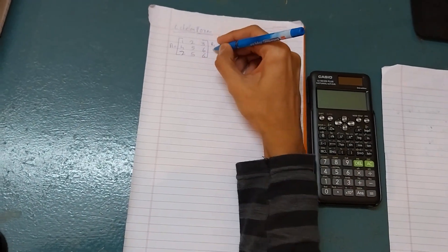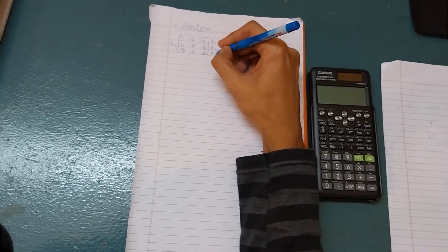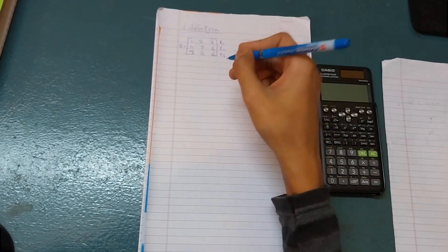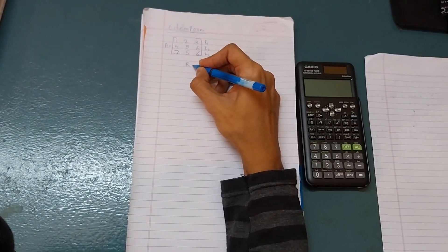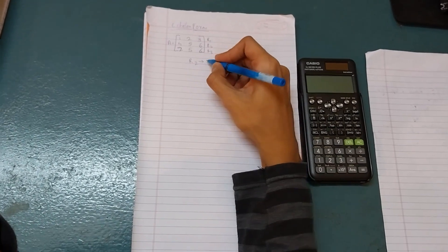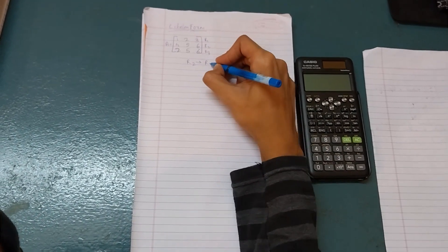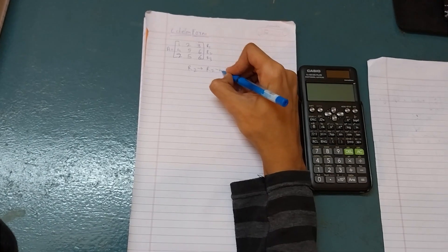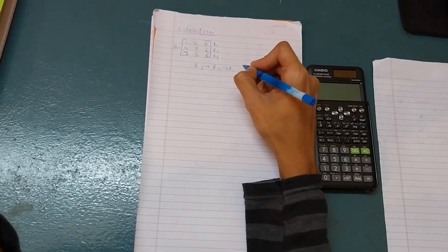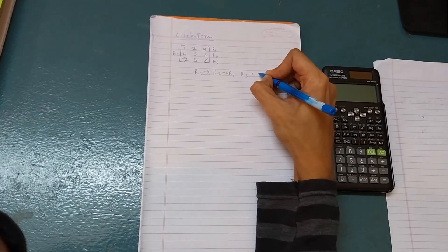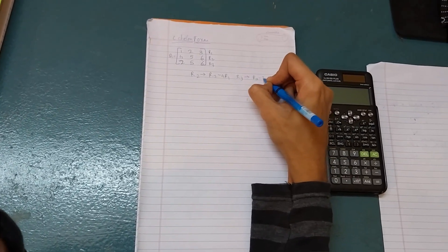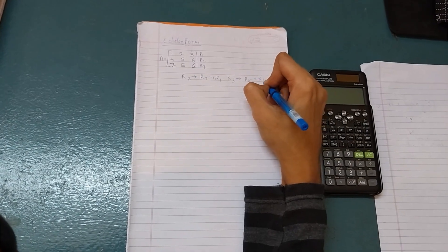You know this is R1, R2 and R3. Now the first row operation is R2 equals R2 minus 4 times R1, and R3 equals R3 minus 2 times R1.